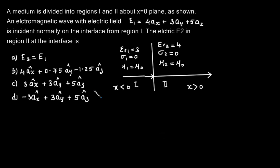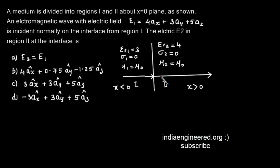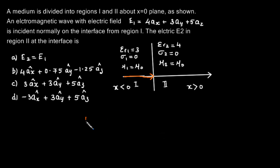A medium is divided into two regions: region 1 for x less than 0 and region 2 for x greater than 0. An electromagnetic wave with electric field E1 equal to 4ax plus 3ay plus 5az is incident normally on the interface from region 1 to region 2. We are asked to find the electric field in region 2.